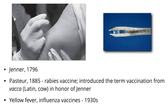Many of us who lived in the pre-eradication era have smallpox scars on our arms. You go to a pool or a beach, you look at the older people — they all have smallpox scars. Some of them are big because the virus caused a little local reaction. In 1885, Pasteur made a rabies vaccine. He had no idea it was a virus. He knew about infectious diseases, and he called this vaccination in honor of Jenner and his work on cowpox, because that's a Latin word for cow.